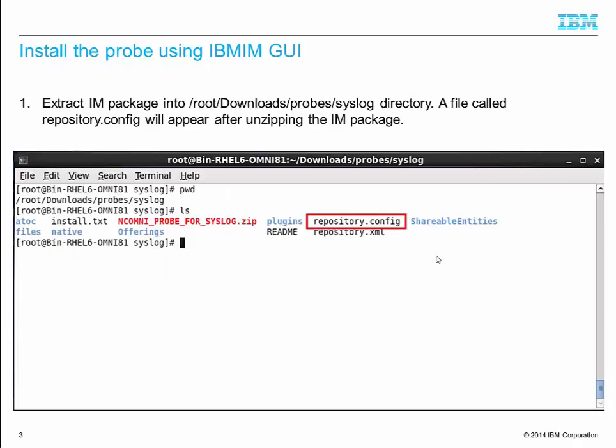Here, I will start to install the syslogprobe. I have extracted the syslogprobe.im package into the root/downloads/probes/syslog directory. You will see a file called repository.config. I will use this file in the later stage.